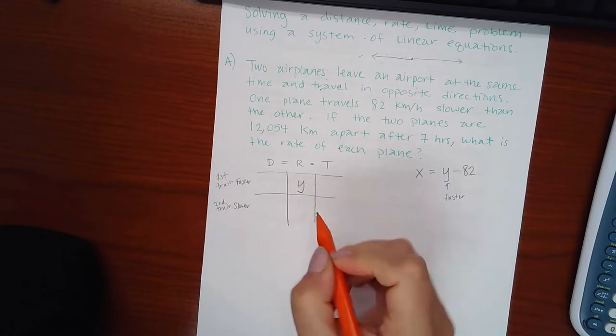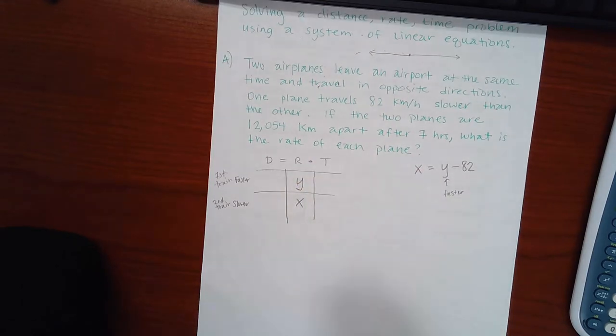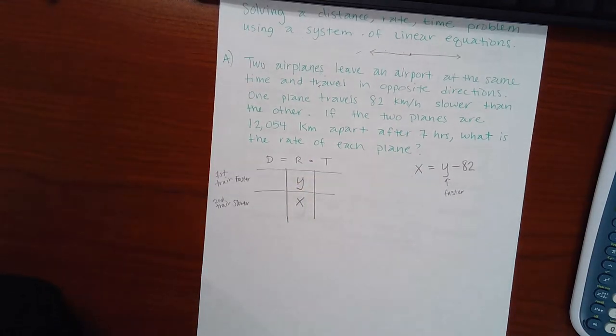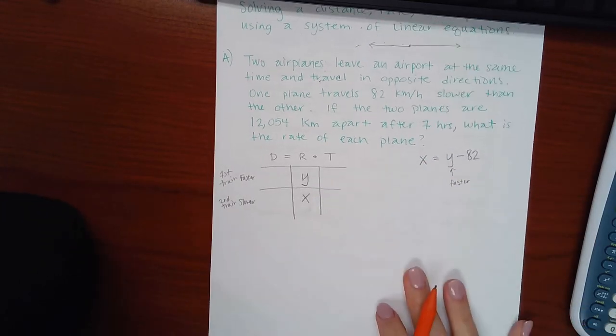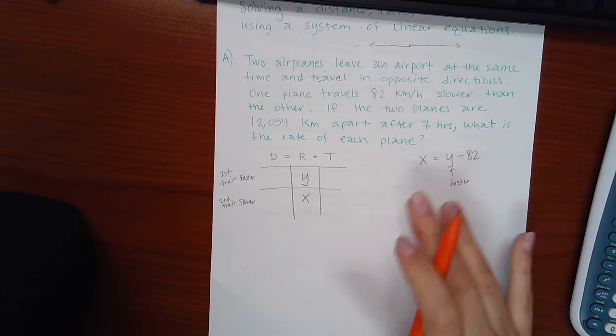So I should probably switch my variables over here because right now I have them in the wrong spot. y should be the faster and x should be the slower. Okay? Or I could have swapped them here instead and left them alone there. You just have to make sure that everything is consistent.